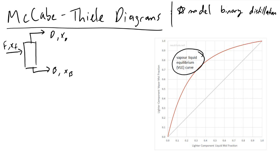A line is defined by nothing more than one point and a slope. With McCabe-Thiele diagrams, the first thing we do is look at your feed composition X sub F. In this example, our feed has a mole fraction of 0.5, so we look up to the 0.5 mark on the Y equals X line and we create what's called the Q line.